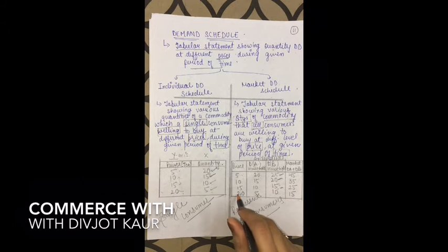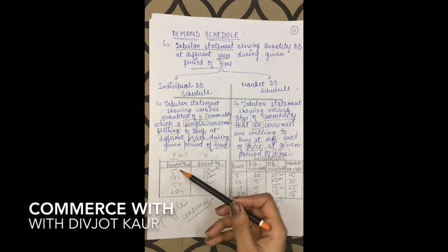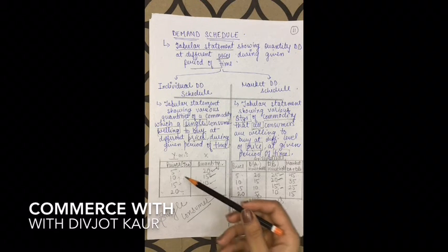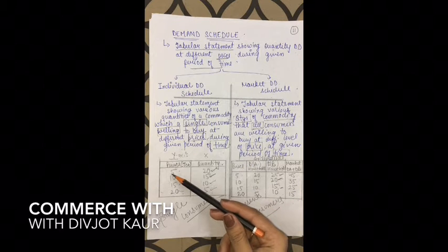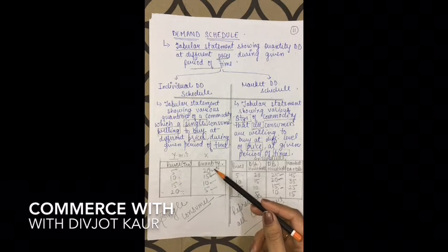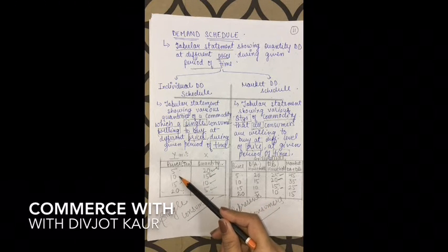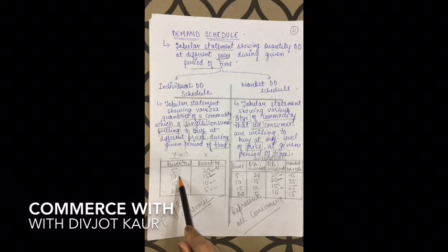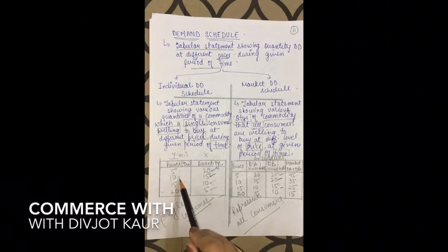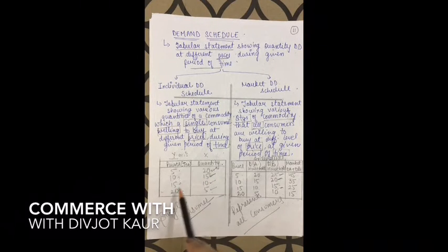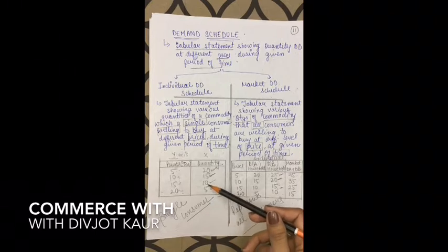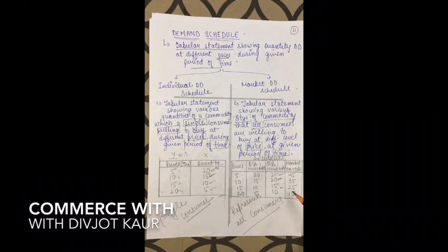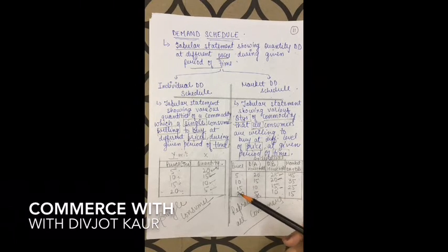As I explained in the last video, when price increases, demand decreases. So when price was 5, I could buy 20 packets of biscuits. But keeping other factors constant — income the same — at price 10 I can only buy 15 biscuit packets. As price increases from 10 to 15 to 20, quantity demanded keeps decreasing.